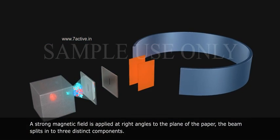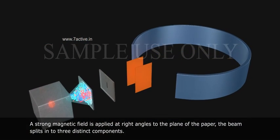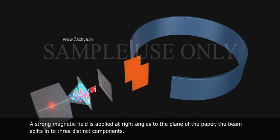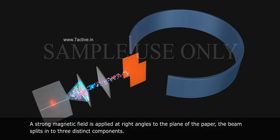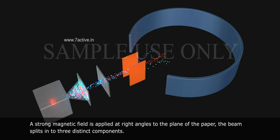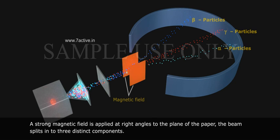A strong magnetic field is applied at right angles to the plane of the paper. The beam splits into three distinct components.